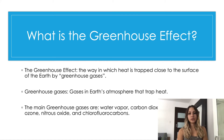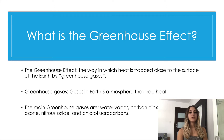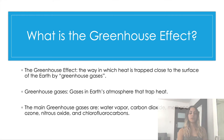Now, what is the greenhouse effect? The greenhouse effect is the way in which heat is trapped close to the surface of the Earth by the greenhouse gases. The greenhouse gases are gases in Earth's atmosphere that trap heat. They let sunlight pass through the atmosphere but they prevent the heat that the sunlight brings from leaving the atmosphere.